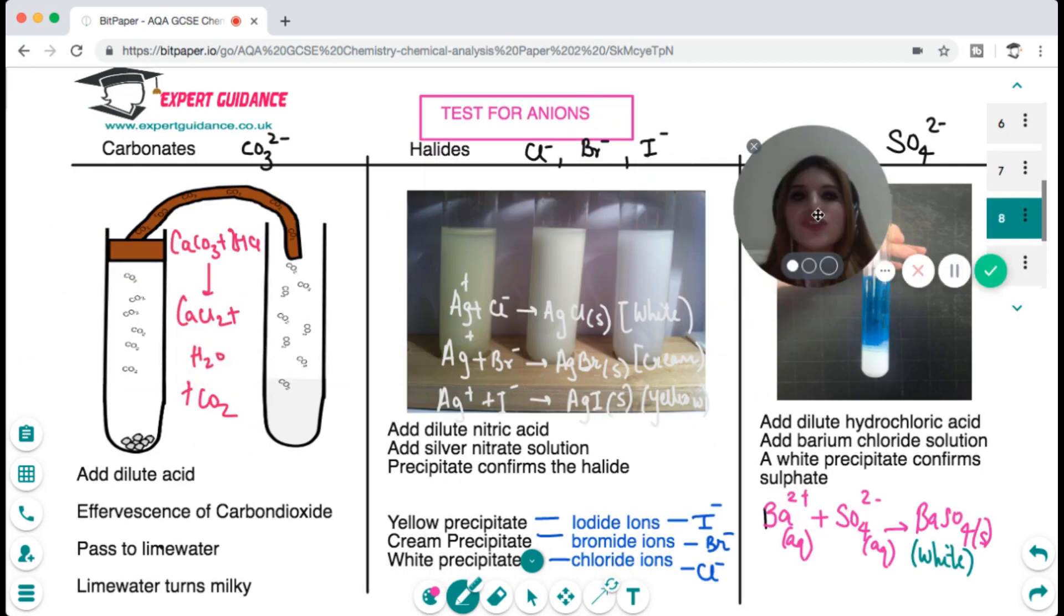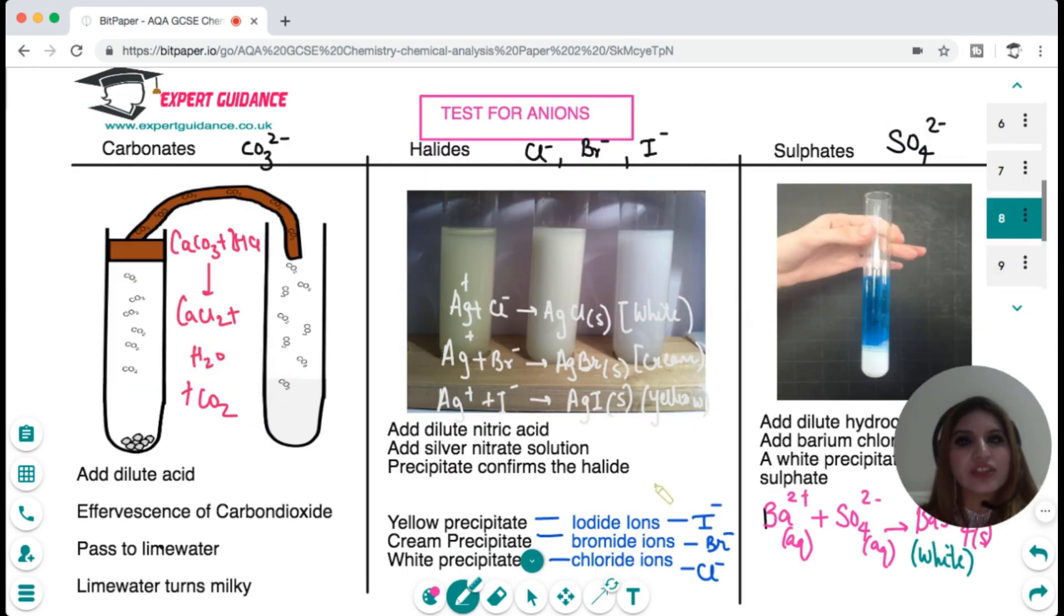After the metal ions you should also know what are the non-metal ions or the anions present in your salt. Anions could be carbonates, halides, and sulfates. For carbonate we add dilute acid and see effervescence, and that effervescence is carbon dioxide. To confirm it is carbon dioxide we pass it through lime water and the lime water should turn milky.